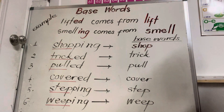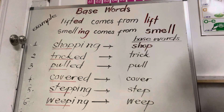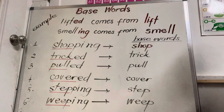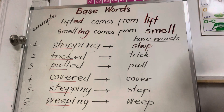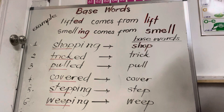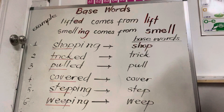Shop. Shopping — okay, so I will say the full word and you say the base word. Shopping — shop. Treat. Trick. Pull — pull. Covered — cover. Stepping — step. Weeping — weep. Congratulations, well done, good job! Now you know what a base word is.